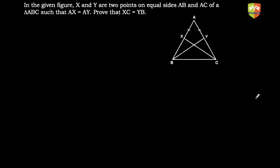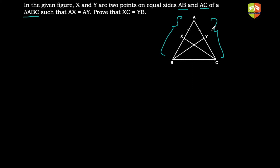Hello and welcome to another problem-solving session on congruent triangles. The question says X and Y are two points on equal sides AB and AC of triangle ABC, such that AX is equal to AY. We have to prove that XC is equal to YB.